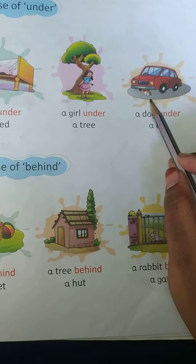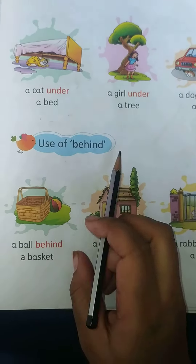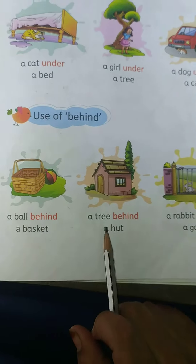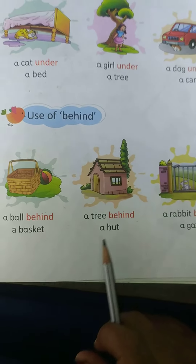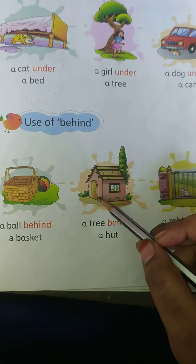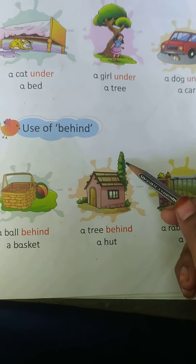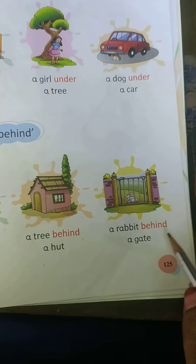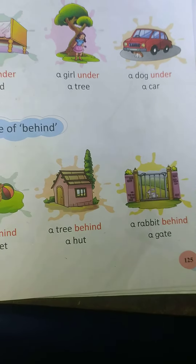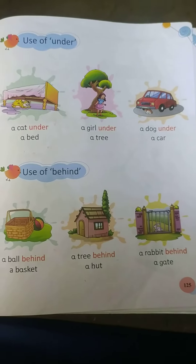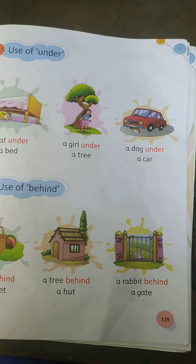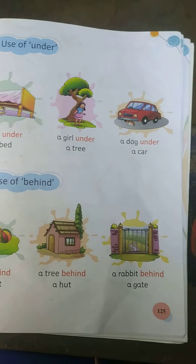A girl under a tree. A tree behind a hut — this tree is behind a hut. A rabbit behind a gate — the rabbit is behind the gate. Okay dear students, page number 125 is complete. Have a nice day, thank you.